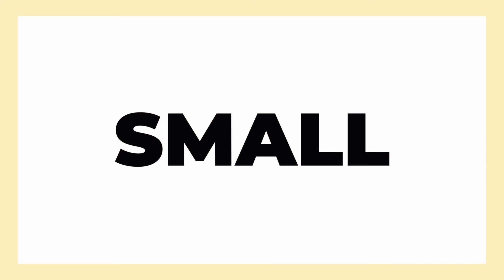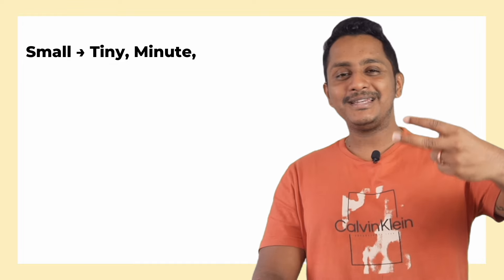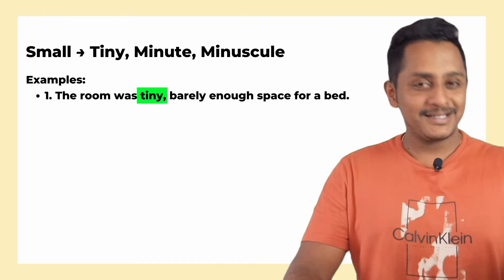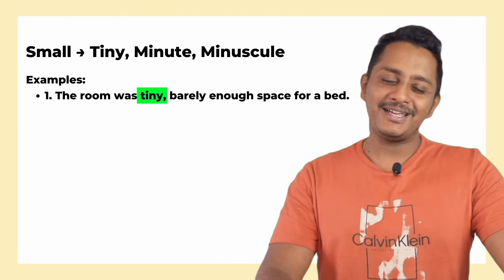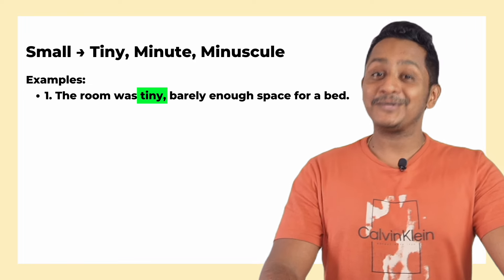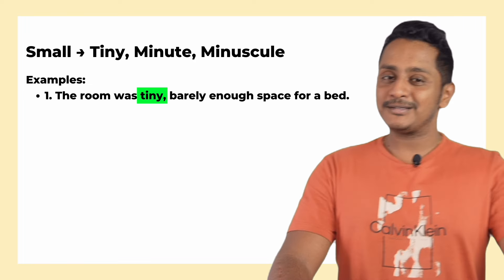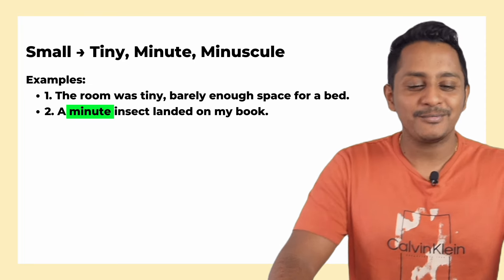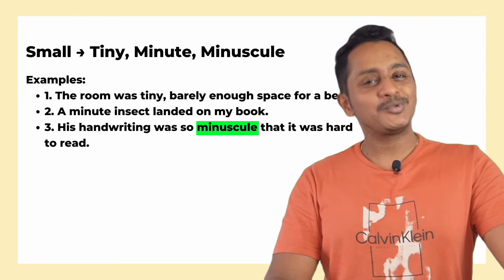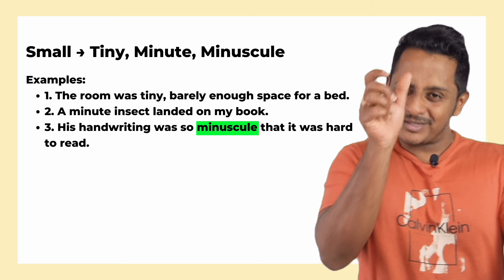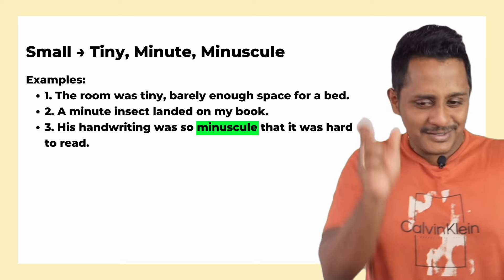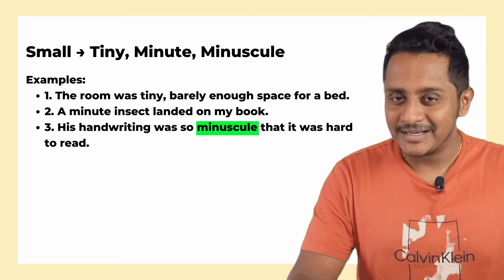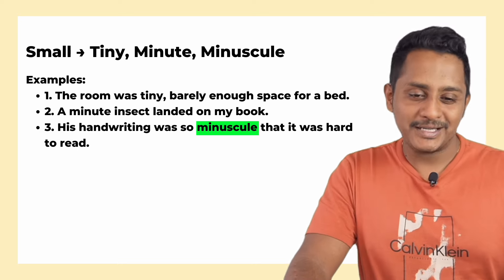The next word is 'small.' Three alternatives are: tiny, minute, and minuscule. For example, instead of 'the room was small,' say 'the room was tiny, barely enough space.' Instead of 'a small insect landed on my bag,' say 'a minute insect landed on my bag.' Instead of 'his handwriting was so small,' say 'his handwriting was so minuscule that it was hard to read.'